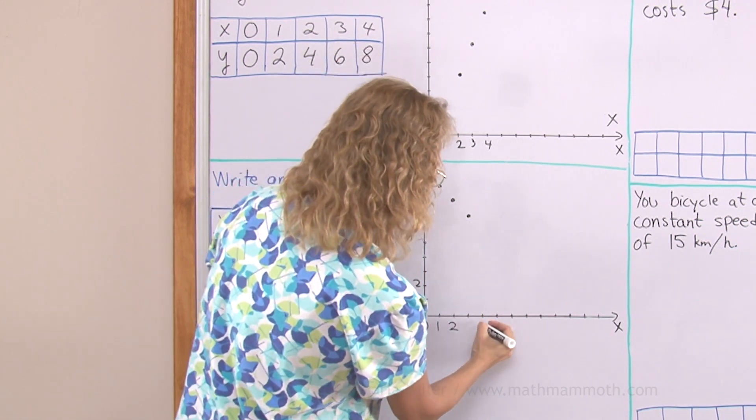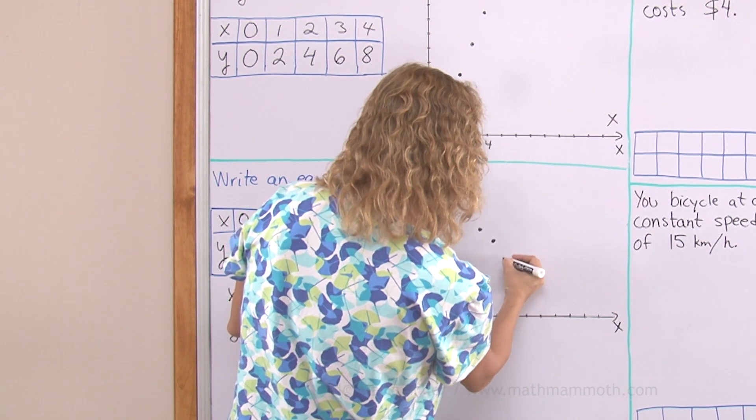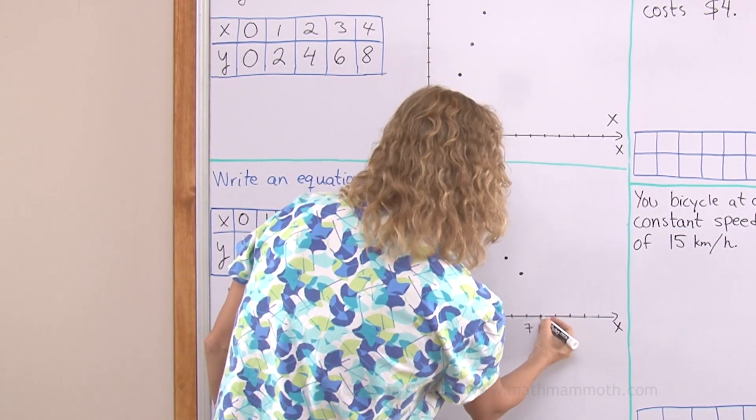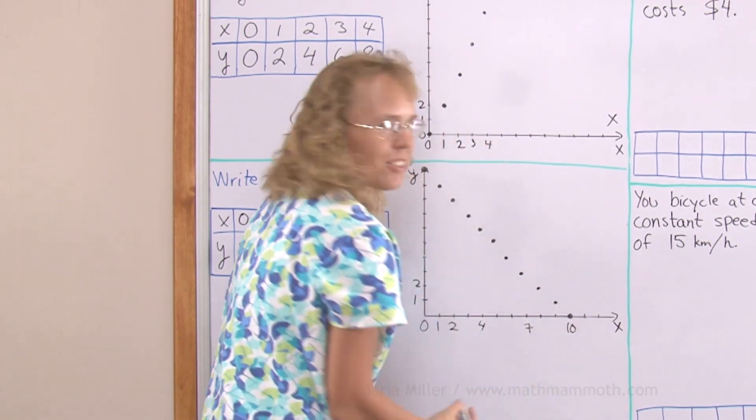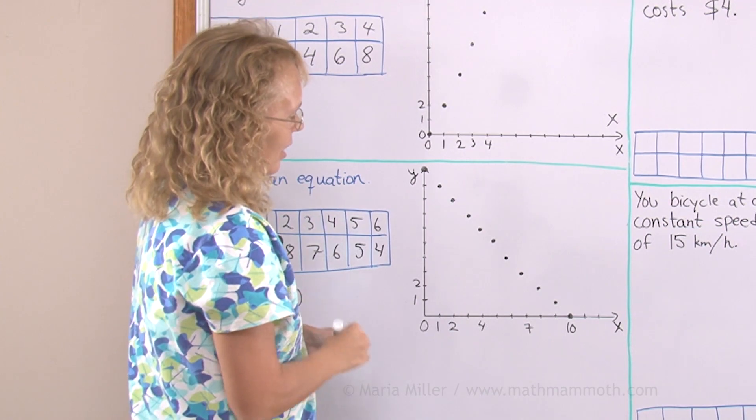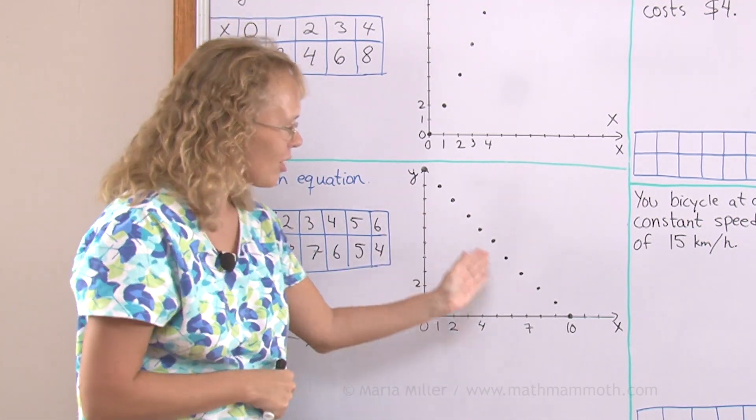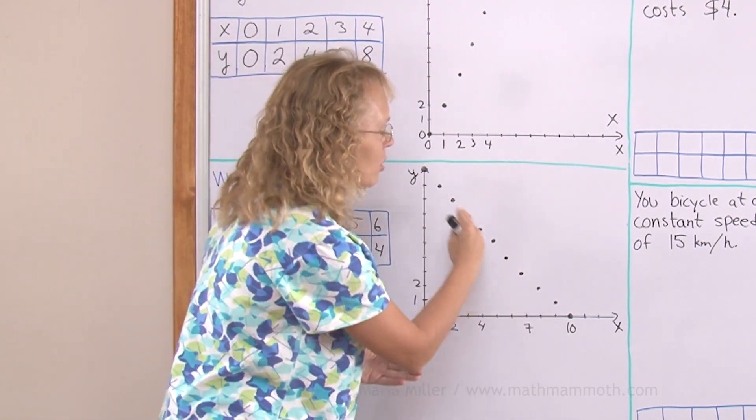3, 7 and 4, 6 and 5, 5, 6, 4, 7, 3, 8, 2, 9, 1 and 10, 0. The best I can. I'm sorry it's a little crooked but the best I can. You can see it goes in a linear pattern or there's a line so to speak here.